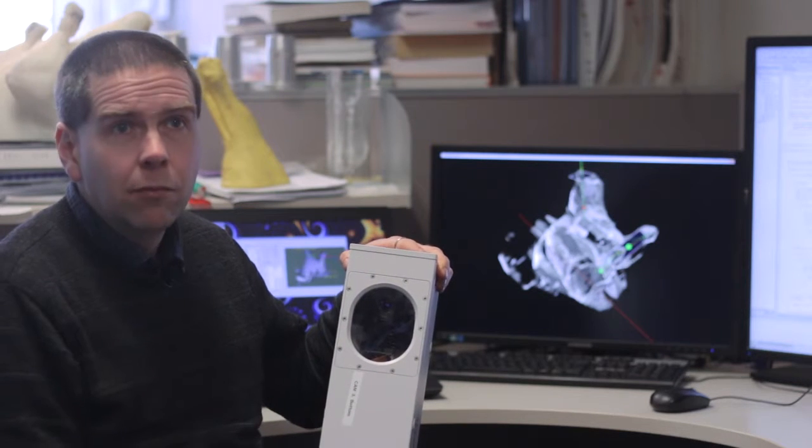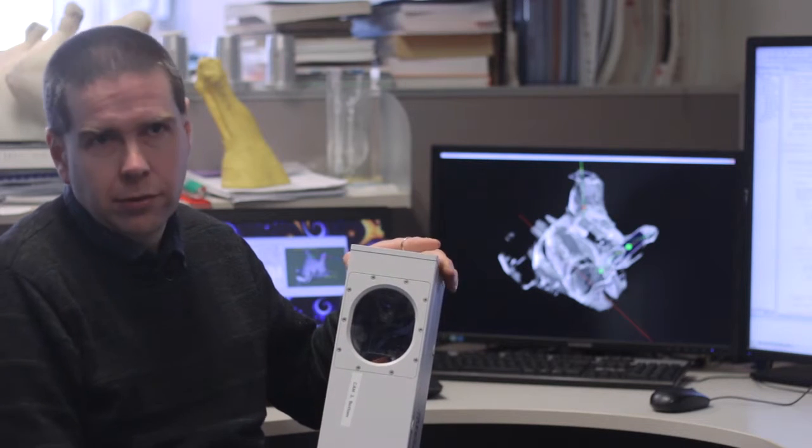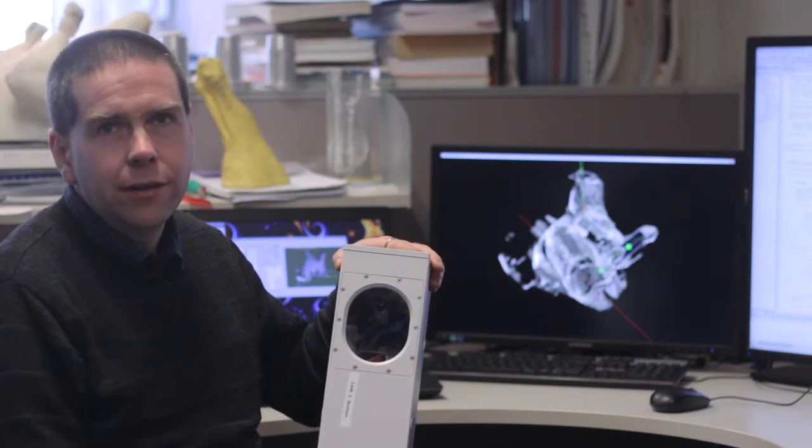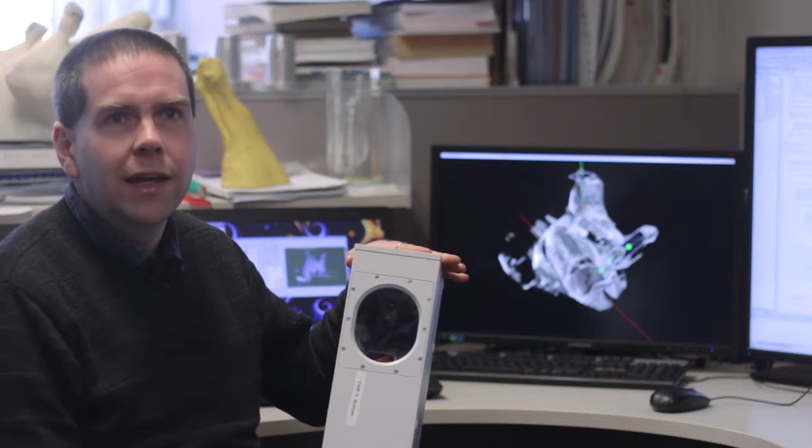We need to scan multiple sides of the animal. To do that, we could just run the product past the scanner several different times. Instead, we actually take three different scanners, three different directions, and put them in the path of the robot as it heads towards the bandsaw. There's no delay in the scanning.